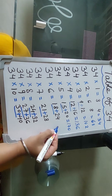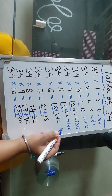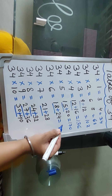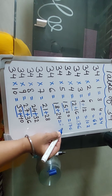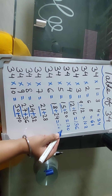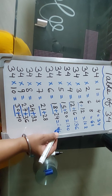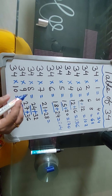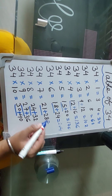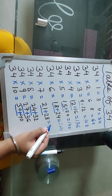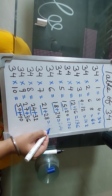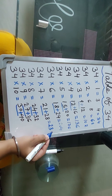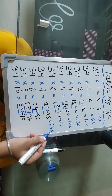34 sixes — 18 plus 2, 20 and 4 — it becomes 204. 34 sevens are 21 plus 2, 23 and 8 — it becomes 238.